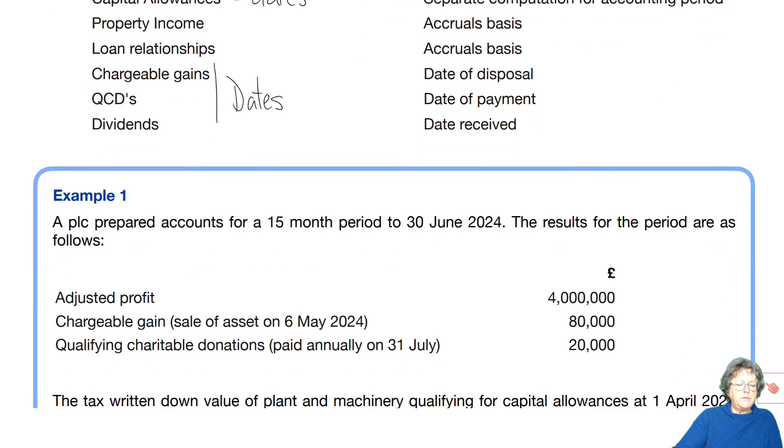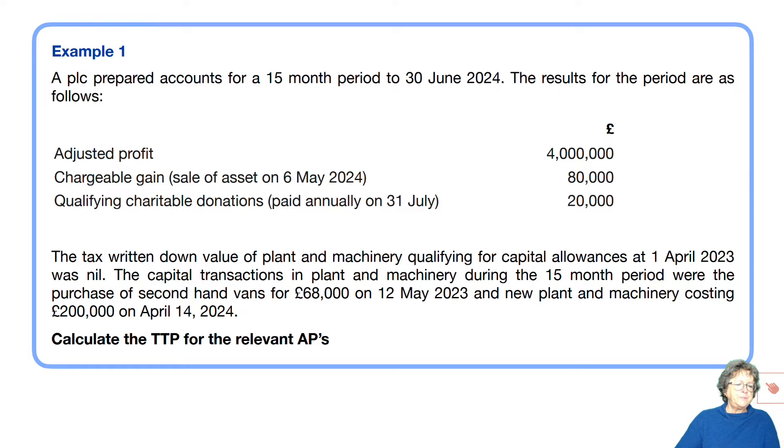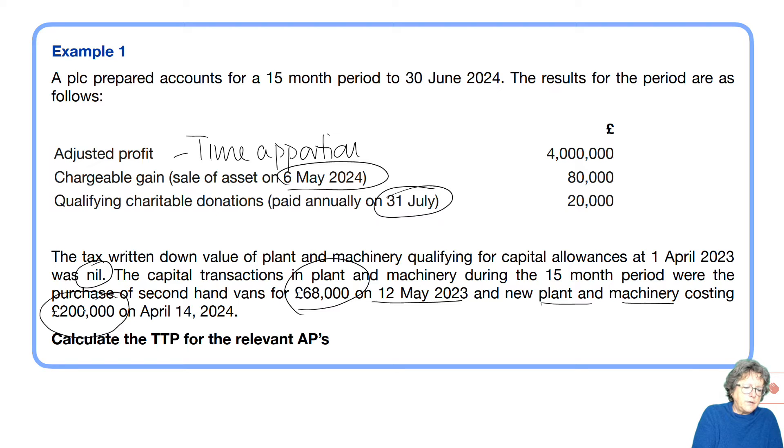It does come up occasionally. It's a very short chapter because we only have one example. A PLC prepared accounts for 15 months to the 30th of June 2024. The results for the period were adjusted profits of 4 million, which we will need to time apportion. Gains and we have a date. QCDs and we have dates. The tax written down value for plant and machinery at the beginning was nil. Capital transactions during the 15 month period were a van on that date and plant and machinery of 200,000 on that date.